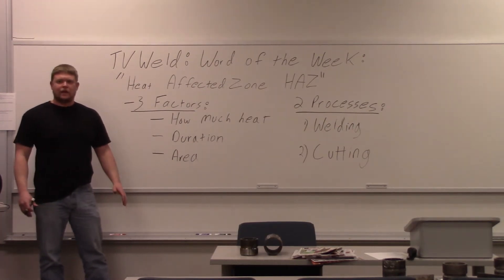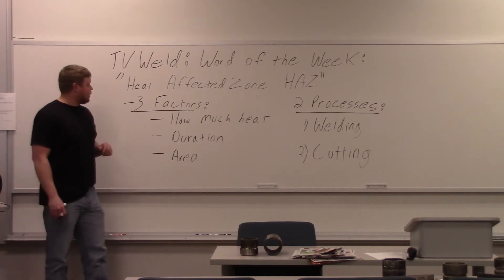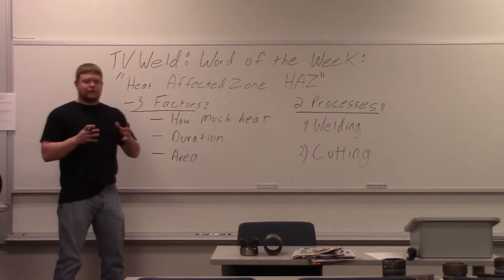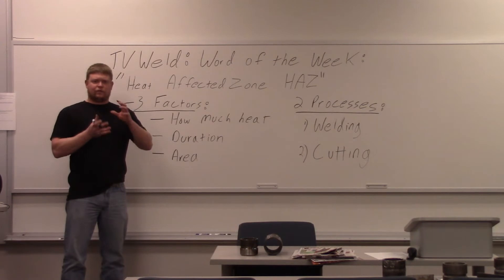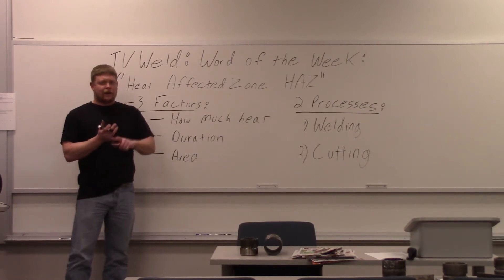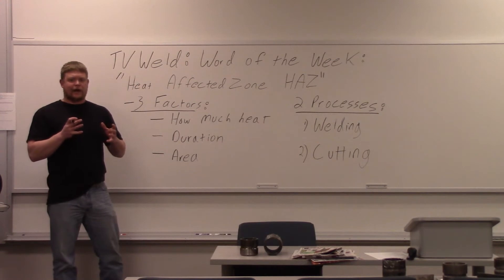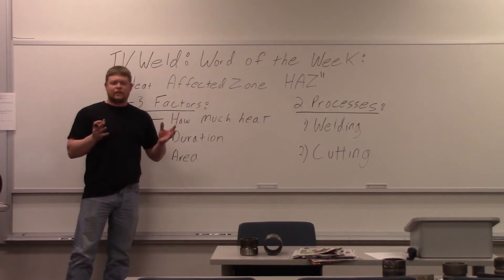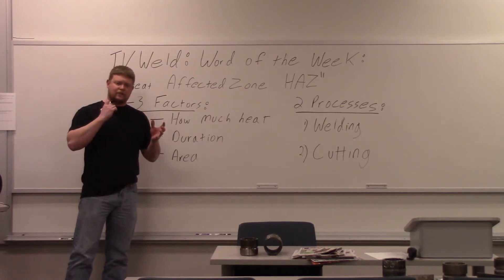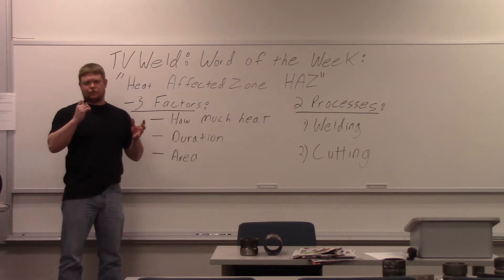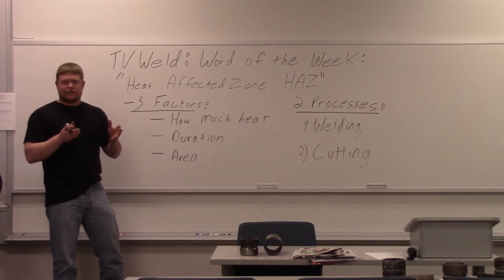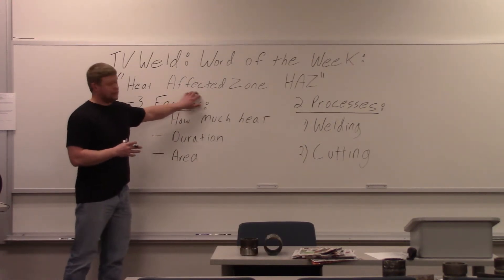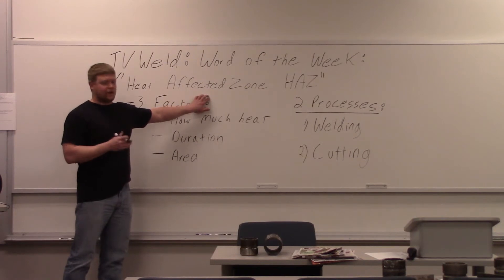Those are all factors that determine what the heat affected zone will do. The reason it's so important is because, microscopically, you've got atoms moving around as you're welding or cutting. If you have a lot of carbon or some alloying element and the material cools too quickly — like with high carbon steel — the heat affected zone will cool too fast and you get a martensitic microstructure, which basically means it's hard. When you get hardness, you get brittleness. If the heat affected zone isn't treated correctly with certain steels, you can have catastrophic failure.